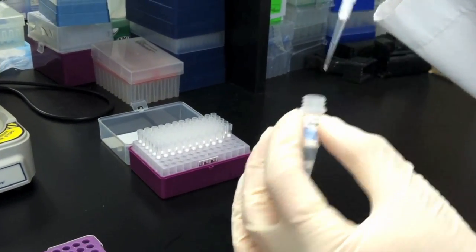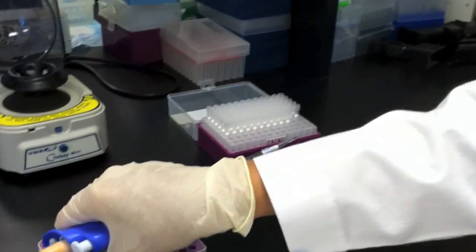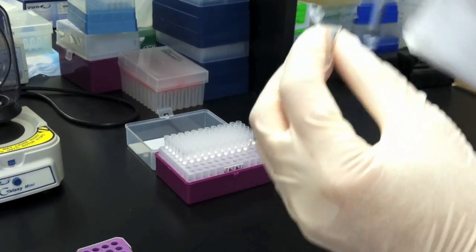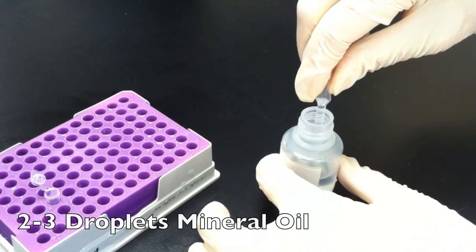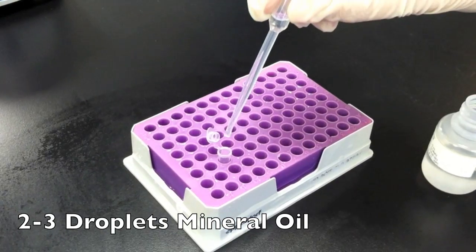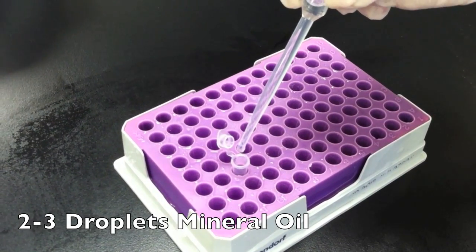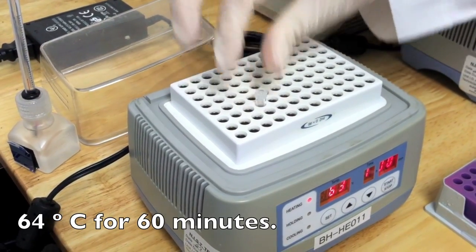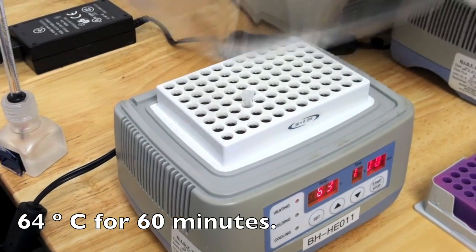Add 25 microliters of the master mix to the 25 microliters diluted sample in the 0.2 milliliter reaction tube. Drop 2 to 3 droplets of mineral oil to the reaction tube using a disposable transfer pipette. Place the reaction tube in a 64 degrees Celsius heat block for 60 minutes.